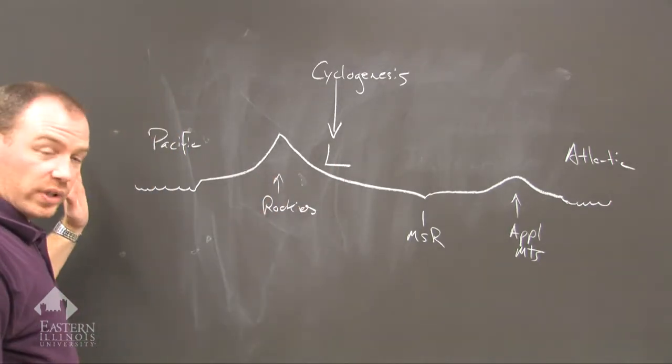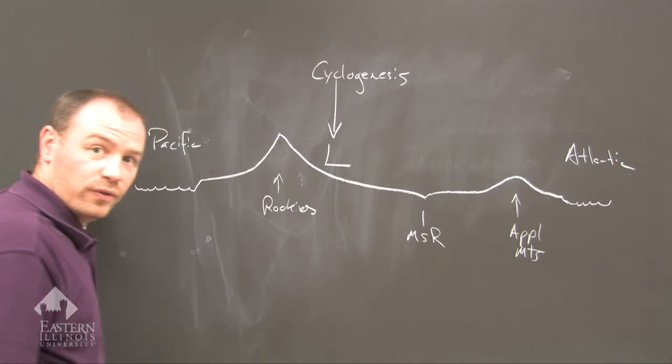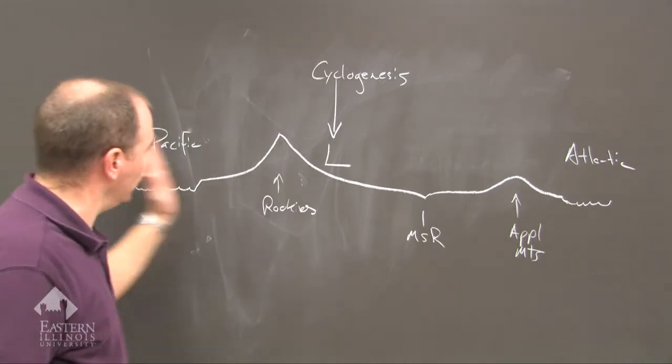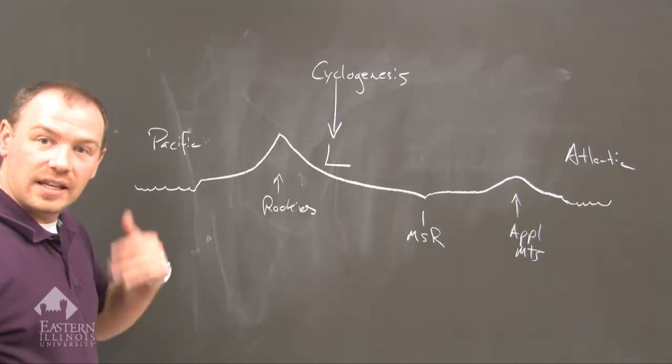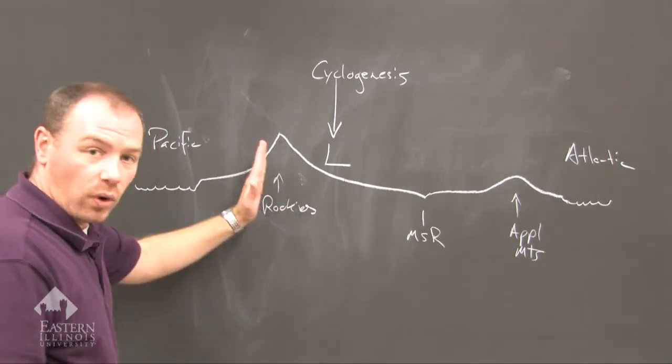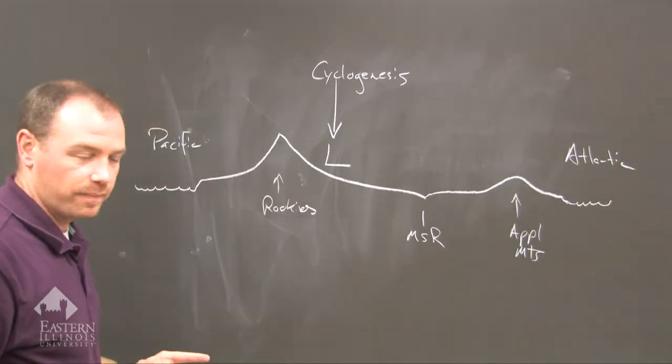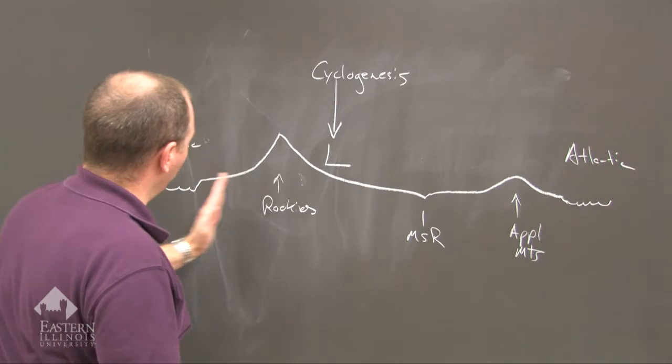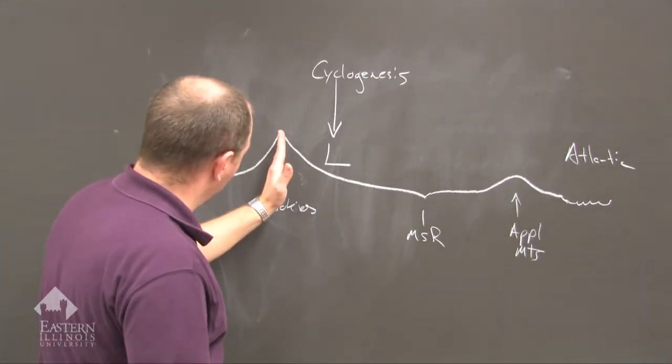Now we see in maps that the mid-latitude cyclone does move from the Pacific Ocean into the United States. As it does, it dissipates because it is forced to weaken because of the change in topography. So when that system hits the Rockies, it's already dissipated.